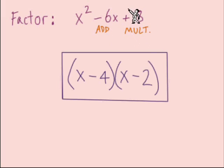So what are some numbers that multiplied together will equal 8? Negative 4 with negative 2, and added together they'll equal that negative 6. There's our answer, x minus 4 times x minus 2.